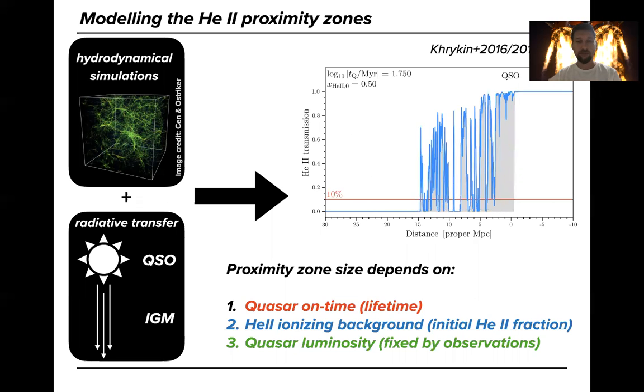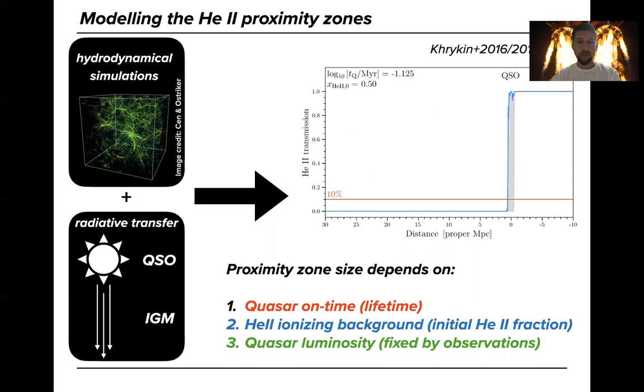So in general, the proximity zone size depends on three parameters listed here in the bottom: quasar on-time, the helium-two ionization background which sets the initial helium two fraction, and the quasar luminosity which we can fix from observations.